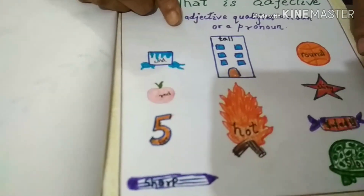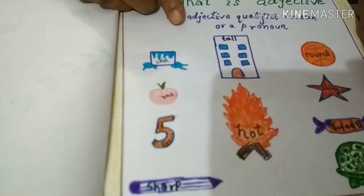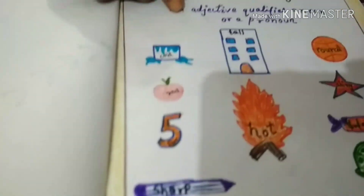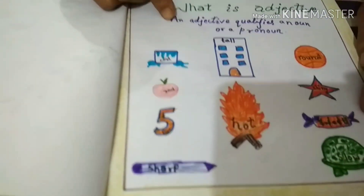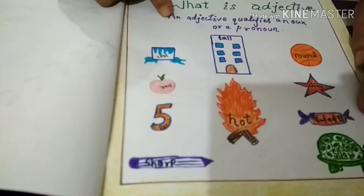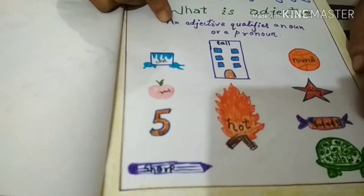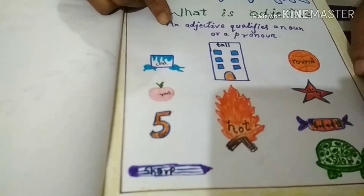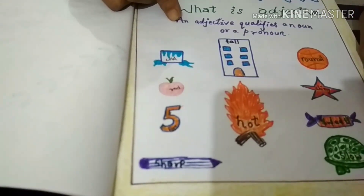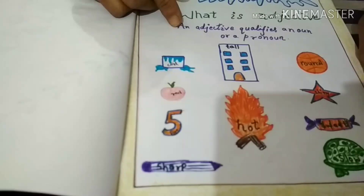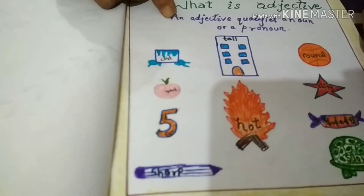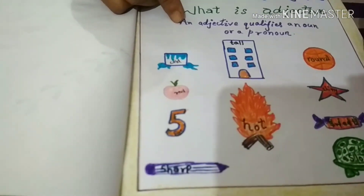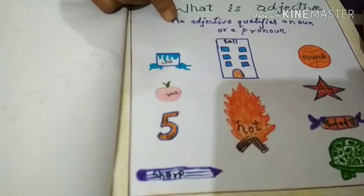Next picture is a toffee. Toffee is sweet. So sweet is an adjective. And the last picture is a tortoise, and here is written slow. Slow is an adjective because it describes the tortoise. How is tortoise?